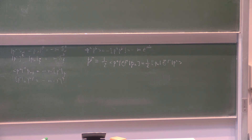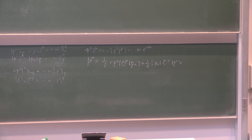The only non-trivial part in all of these things are the consistent signs between, say, this equation and this equation. And the signs — these are just signs. Now we have two types — three types of indices, all of which are contracted with Levi-Civita. So you have three sources for plus or minus ones. This is why I'm just showing them to you now.